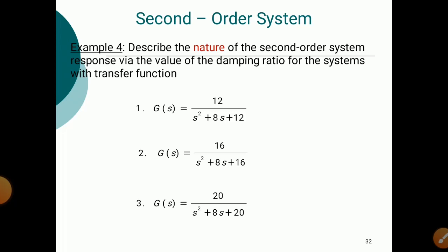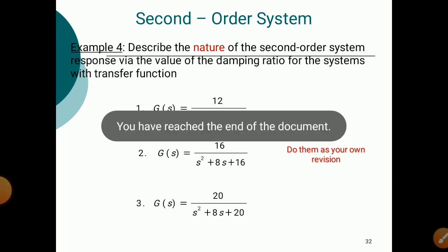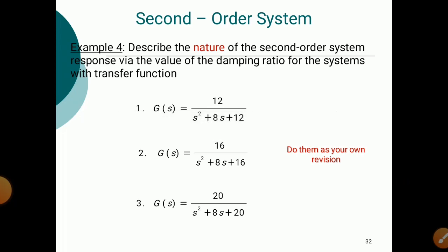The question is to describe the nature of the second order system response via the value of the damping ratio for the given transfer function. Try this at home and plot the second order response for the following systems as your own revision. Thank you for watching. In this video we understood the concept of second order system and transient response specifications.